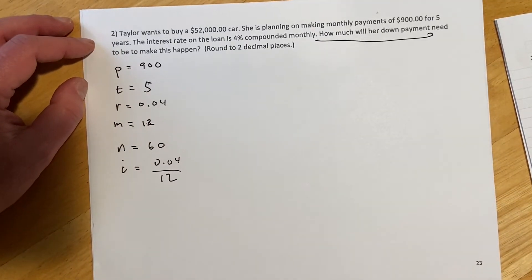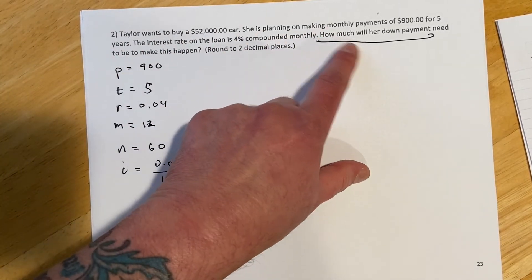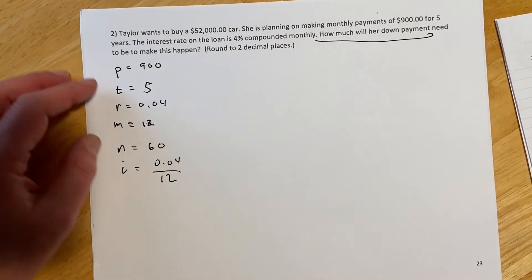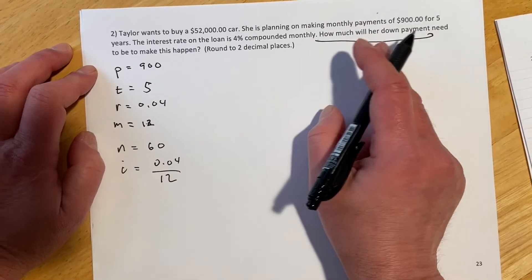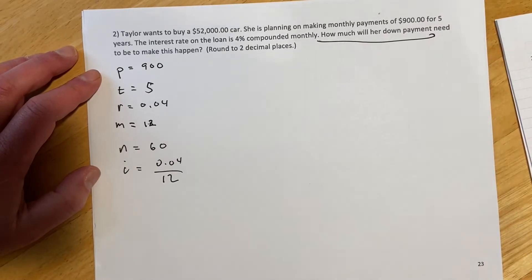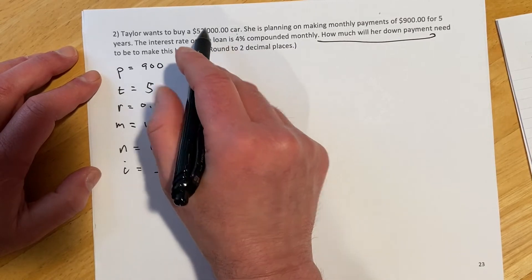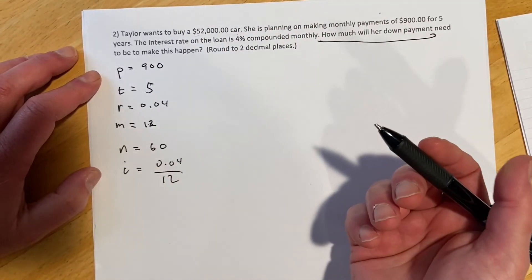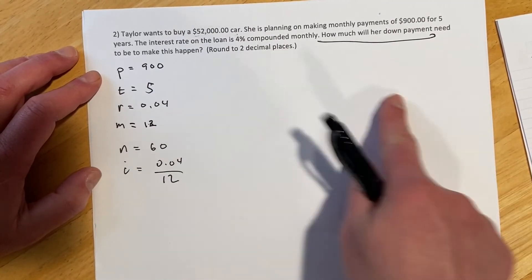And then what we're trying to figure out is how much will her down payment need to be to make that happen. So what we're going to find is the A sub N. And that was the amount that we borrowed. And this is asking for the down payment. So the number that we get is going to be how much she actually borrowed on the car. And we know how much the car cost. So then if we do how much the car cost minus how much she borrowed, that difference is how much she put down. So we'll find this and then we'll have one more step to go after that. So then we'll cut away and fill this all out and come back.